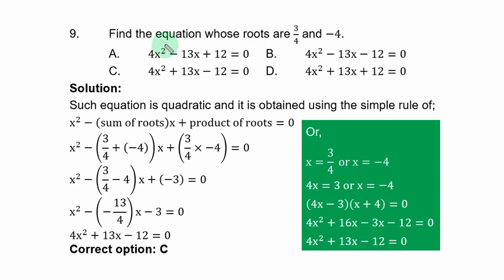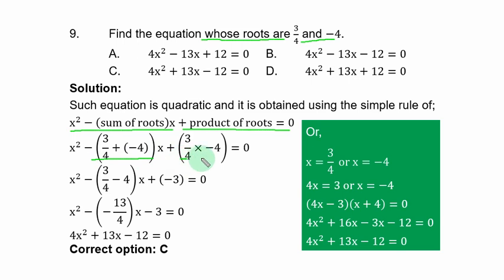Question 9: find the quadratic equation whose roots are 3/4 and −4. Such an equation is obtained using: x² − (sum of roots)x + (product of roots) = 0. Sum of roots = 3/4 + (−4) = 3/4 − 4 = −13/4. Product of roots = (3/4)(−4) = −3.